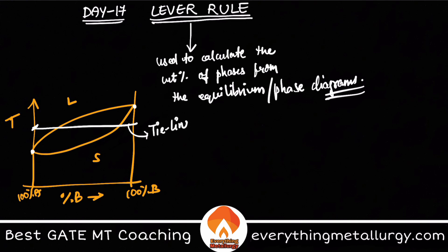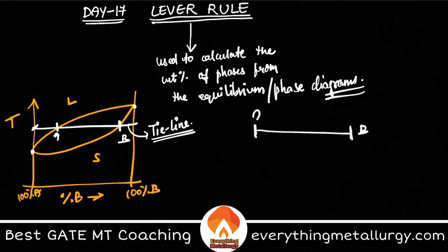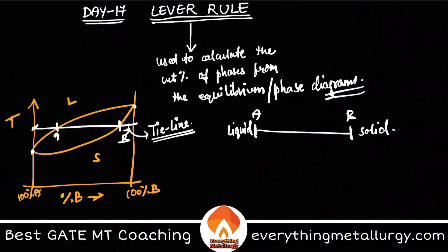This line which we drew is called a tie line. You can observe some points where it intersects my liquidus and solidus. Let me label this as point A and point B. On the left side of point A we have pure liquid, and on the right side of point B we have pure solid. The region between A and B is the two-phase combination — remember, all at this particular temperature.